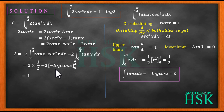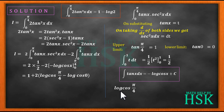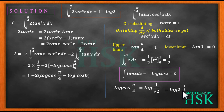The first part gives 1. Applying the limits to the log term, the two minus signs multiply to give a plus sign, so I get: log(cos(π/4)) - log(cos(0)). Now cos(π/4) = 1/√2, so log(cos(π/4)) = log(1/√2) = log(2^(-1/2)) = -1/2 · log 2.